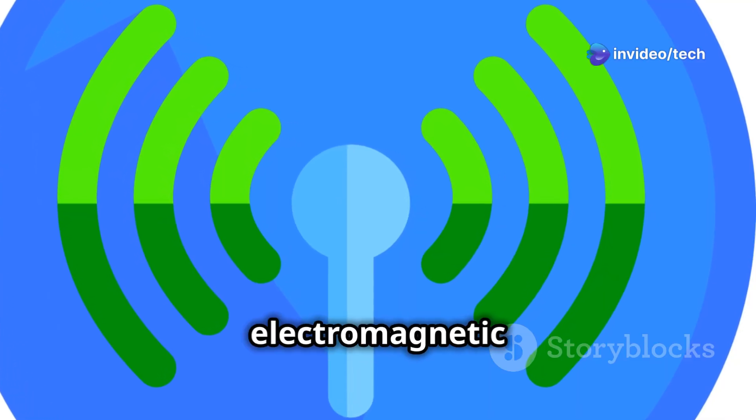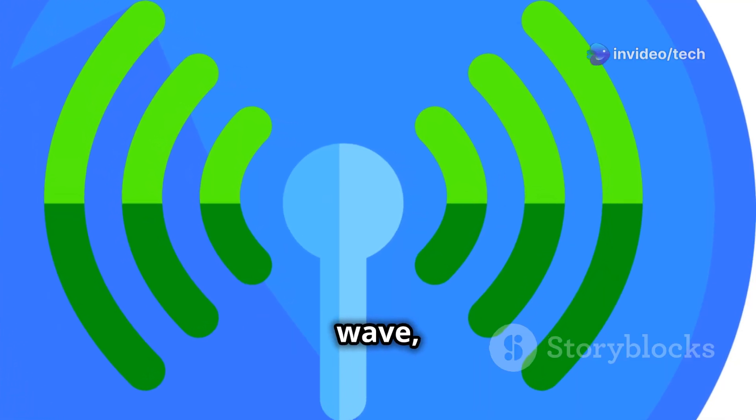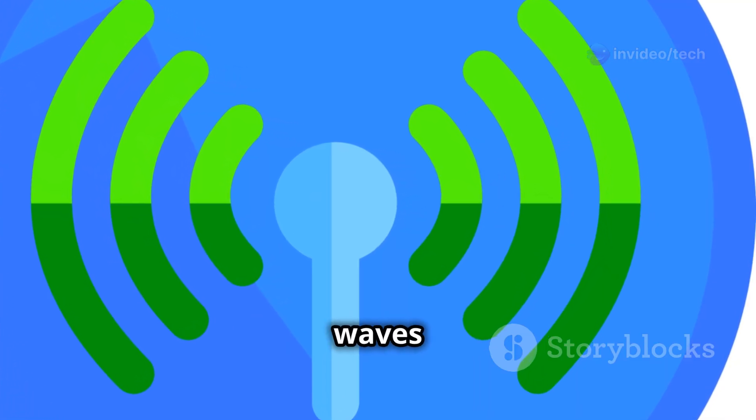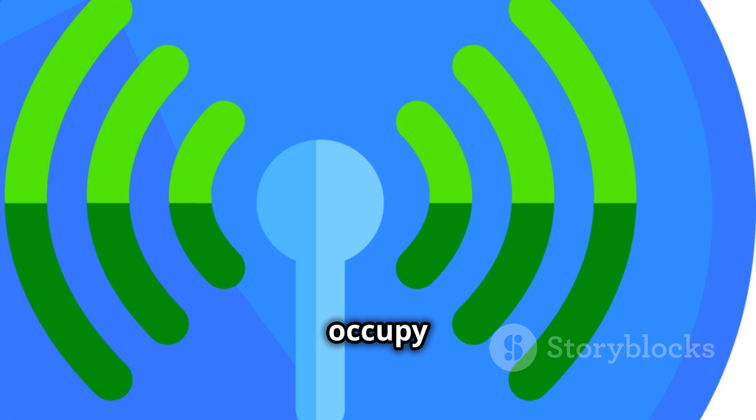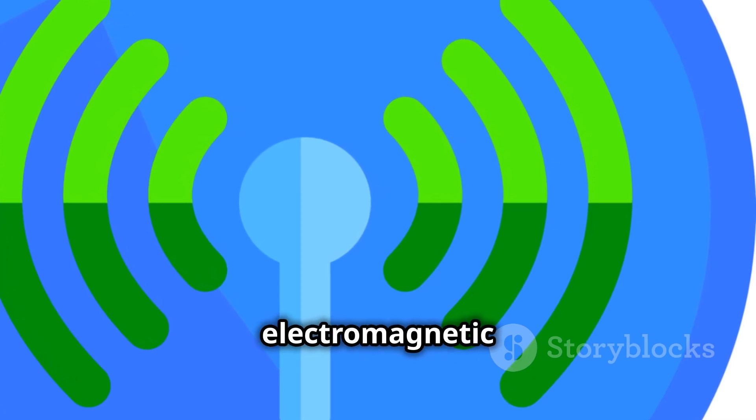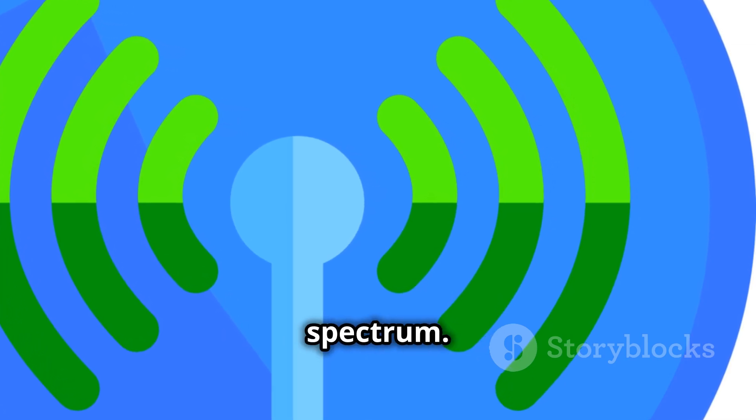Microwaves are a type of electromagnetic wave, just like radio waves and light waves. They occupy a specific part of the electromagnetic spectrum.